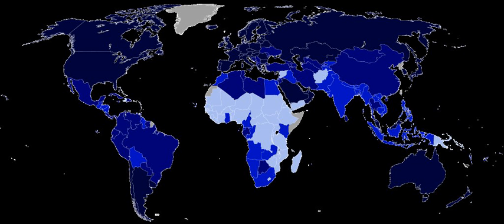The list below displays the top ranked country from each year of the Human Development Index. Norway has been ranked the highest 14 times, Canada 8 times, and Japan 3 times. Iceland has been ranked highest twice. The year represents when the report was published; in parentheses is the year for which the index was calculated.